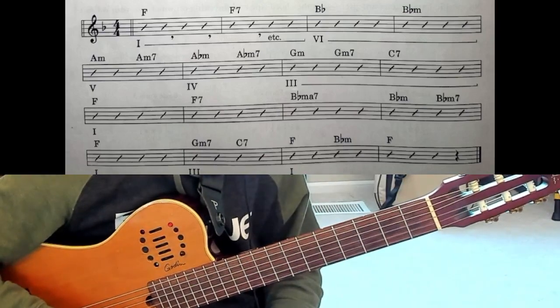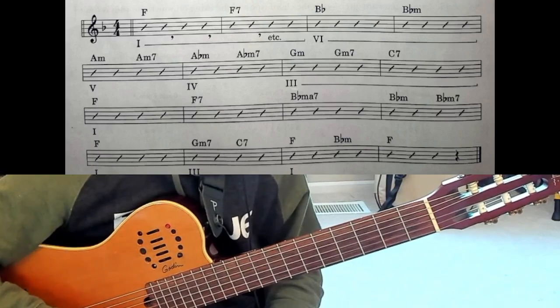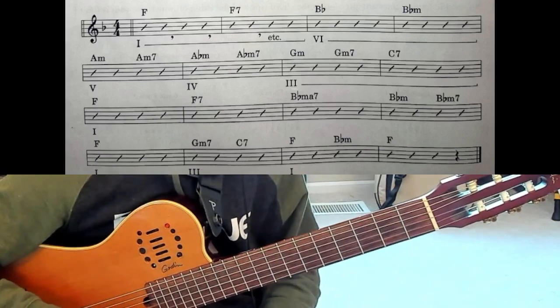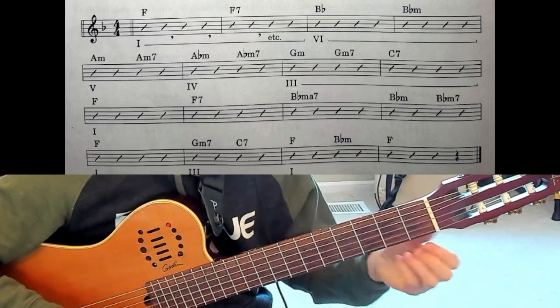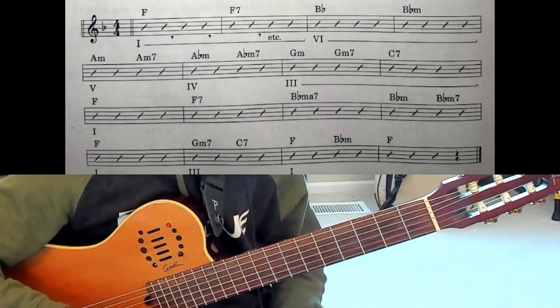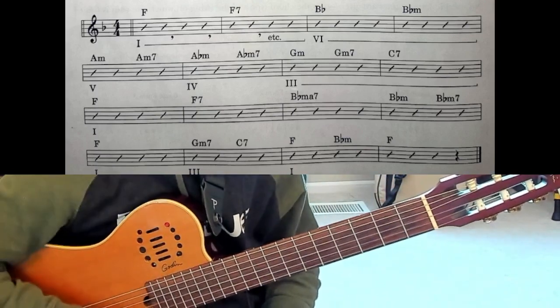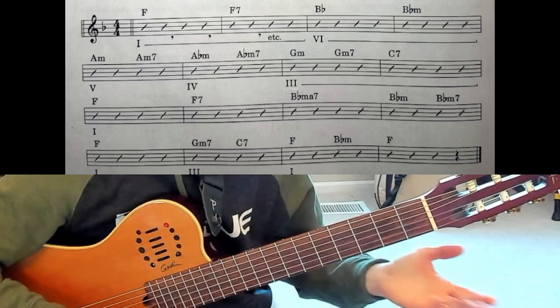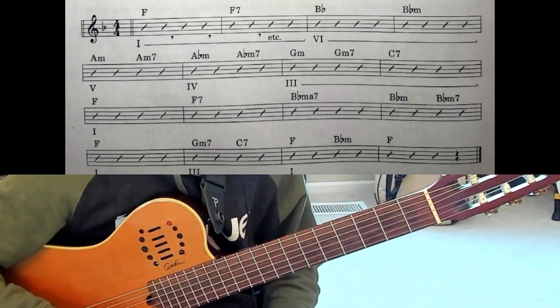So here's the chord progression in 6/8. Remember the Roman numeral indicates the fret where your first finger plays. I'm going to walk through this progression one chord at a time and then I'll play through it at the end to give you an example.